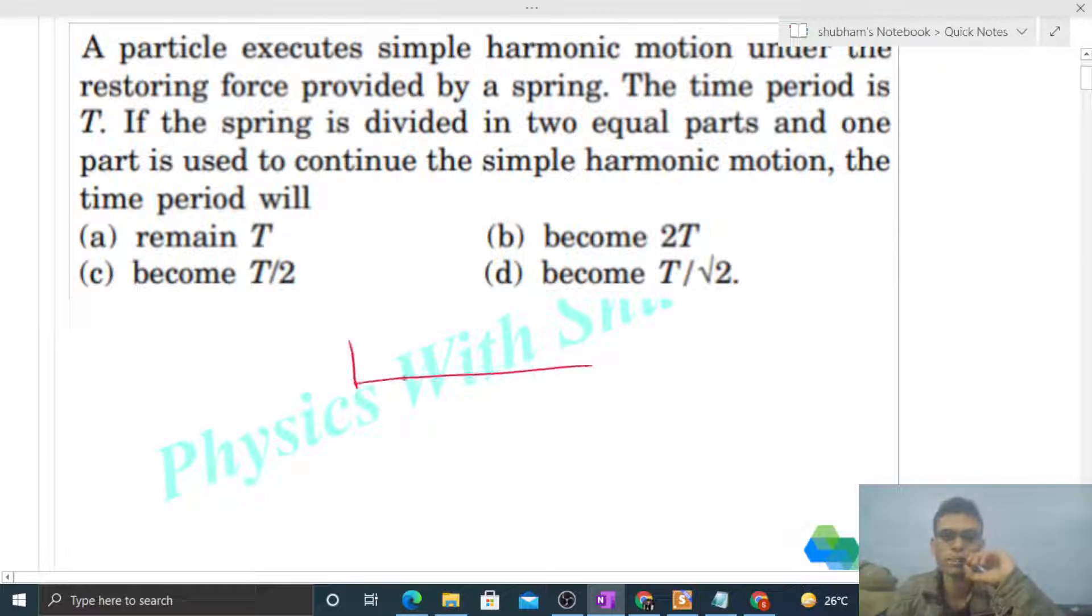So let's say I have a spring-block system, right? Let's say the spring constant of this spring is k and the mass of this block is small m. Then the time period for simple harmonic motion is 2π by ω, and ω for this spring-block system will be under root of k by m.